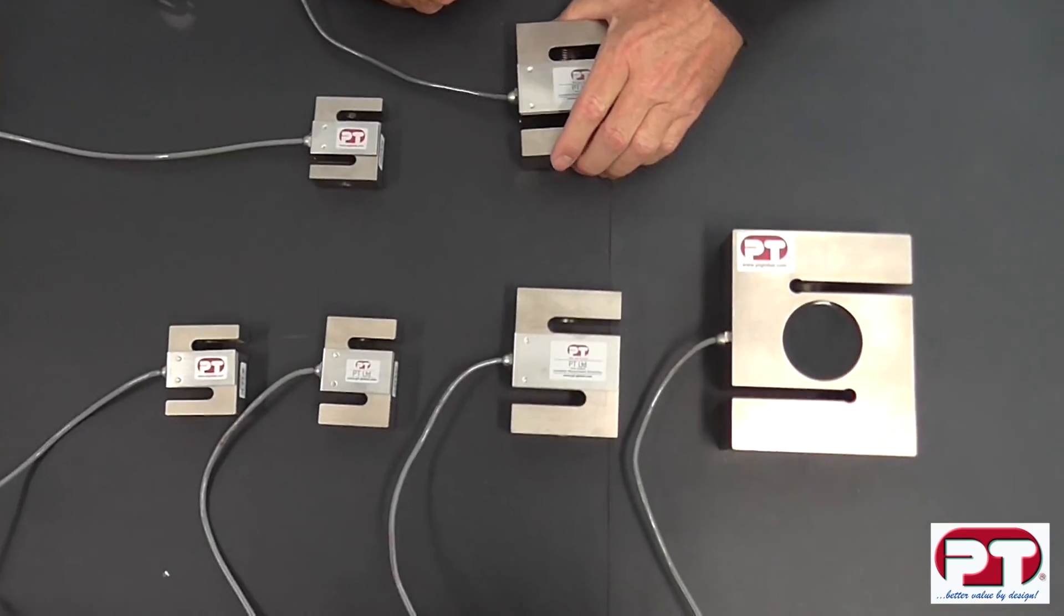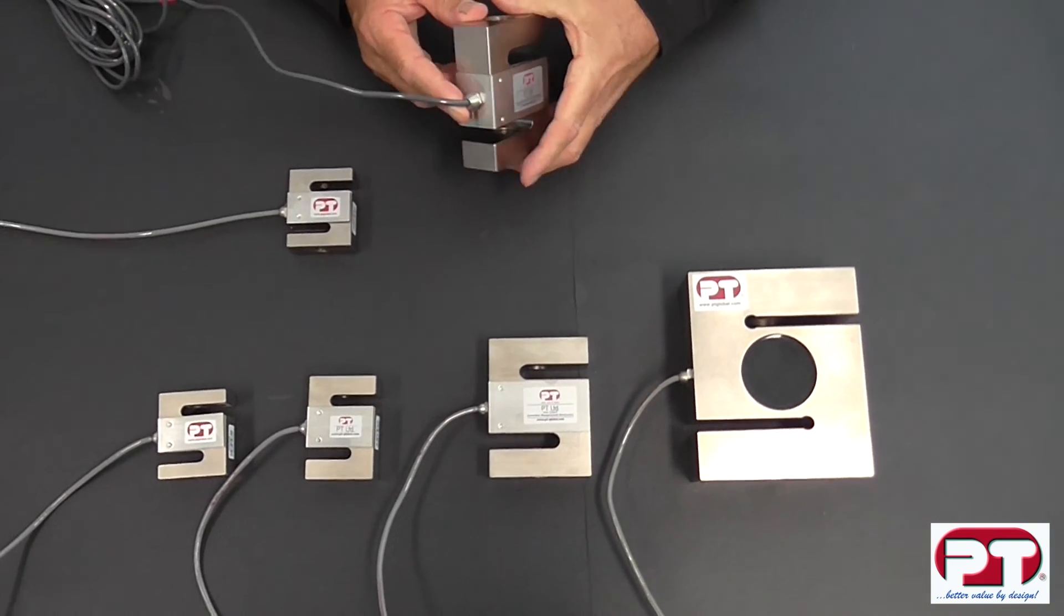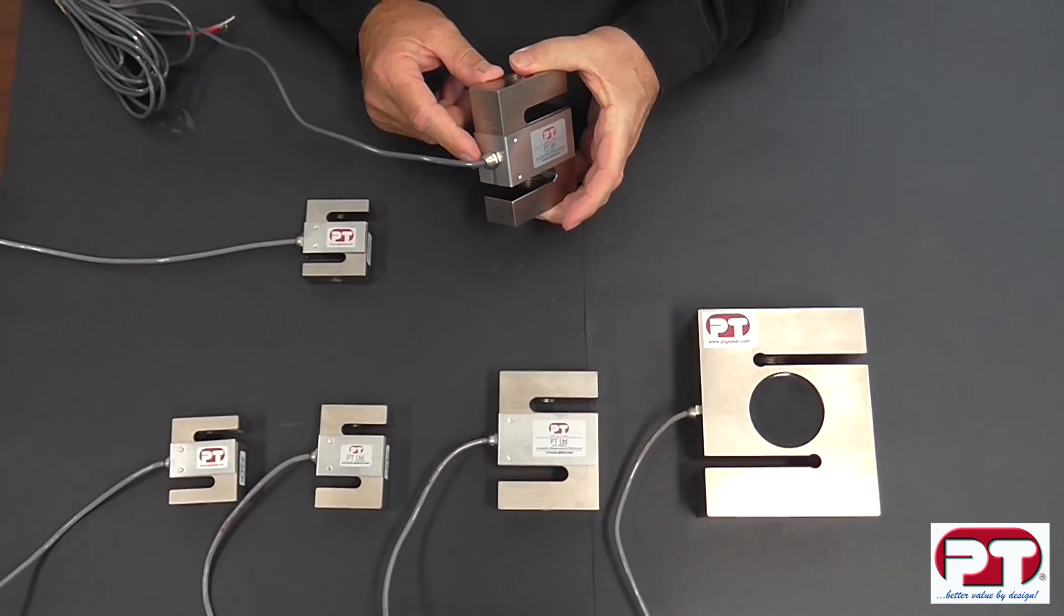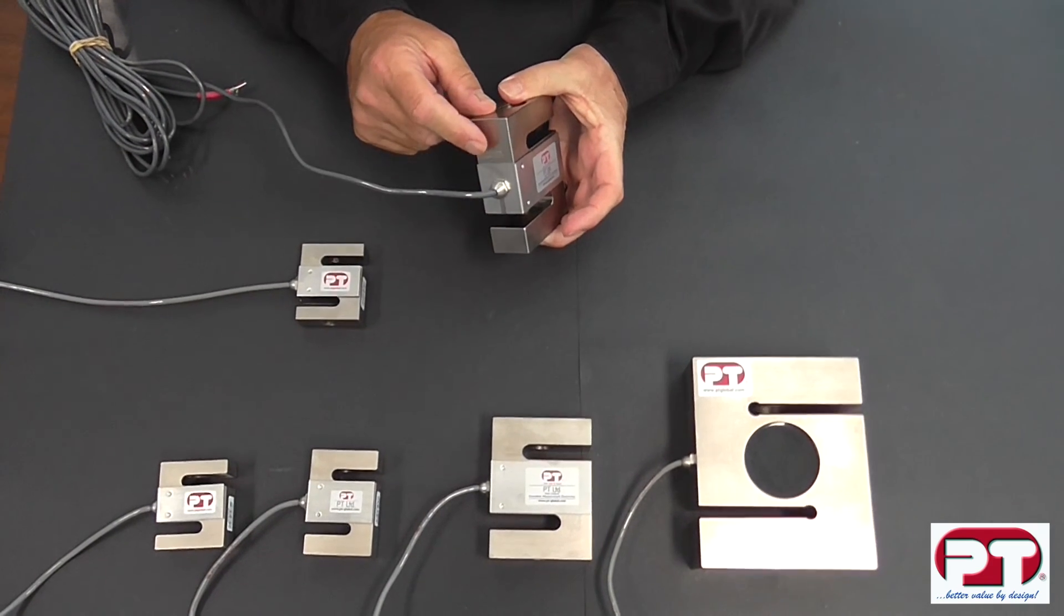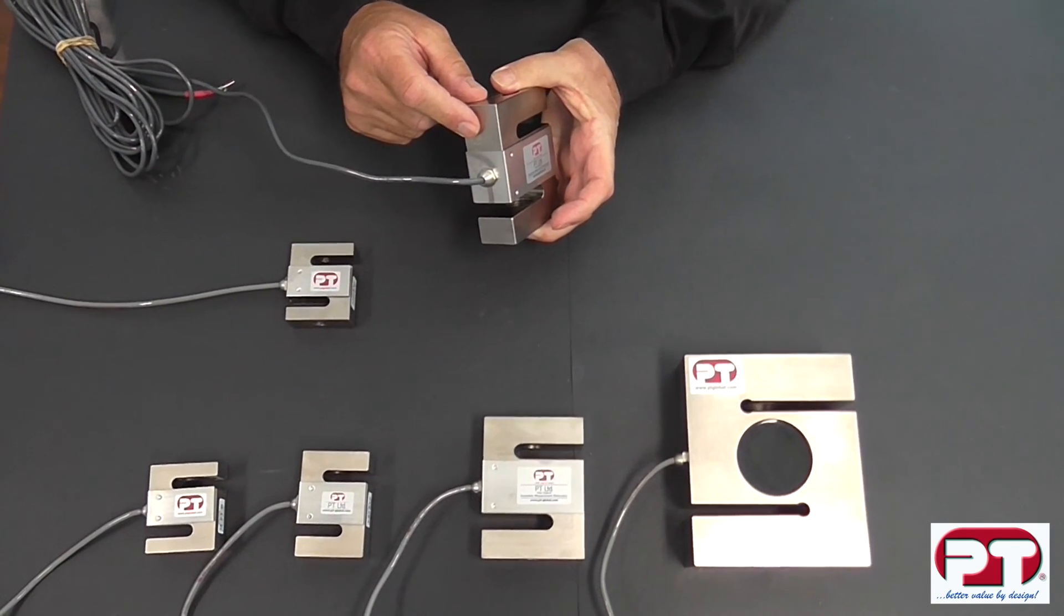On the load cell body, at the cable entry, you'll find engraved the capacity and serial number of the load cell. This is a 3000 capacity cell.